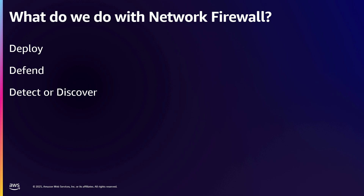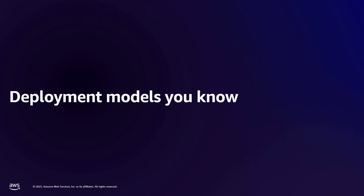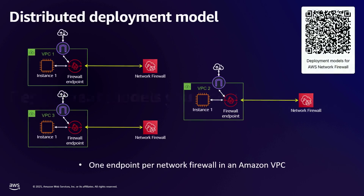Let's start out talking about deployment models. There are a whole bunch of deployment models for AWS Network Firewall to fit different use cases and scenarios. First, you have a distributed deployment model — there's a blog post that covers it in great detail. In this situation, you'll have your firewall endpoints in each VPC, and you get one endpoint per network firewall that's in a VPC, distributed across your different VPCs where you want to do your filtering.